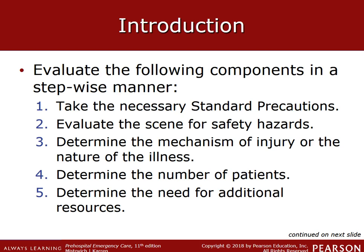Number one: take necessary standard precautions — BSI, body substance isolation — to protect yourself against contact with blood and other bodily fluids, and put on any other necessary personal protective equipment such as gloves, eye protection, surgical mask, high-efficiency N95 particulate mask for possible TB calls, gown, helmet, and turnout gear.